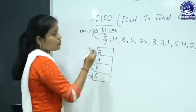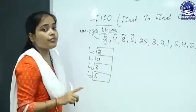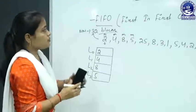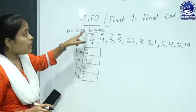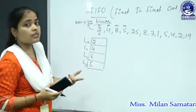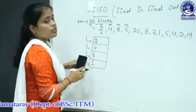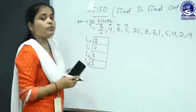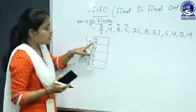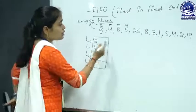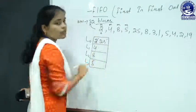Then block 25 is requested. We are using FIFO, which says: the block that entered the cache memory first will be replaced first. Block 2 entered first, so you replace block 2 and place block 25. That is also a miss.